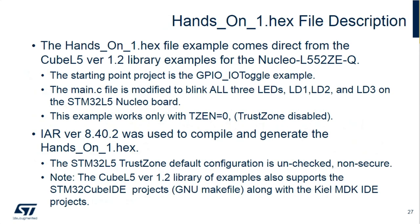The starting point for hands-on number one was the Cube L5 version 1.2 library. I took the GPIO toggle example for the L5 Nucleo board — all examples are based on board support packages. TrustZone is disabled in this example, so it will not run if you enable TrustZone, because there are additional steps required. It was compiled under IAR version 8.4. In IAR you have to identify whether TrustZone is enabled or not, and declare what's secure and non-secure when creating a project — I'll cover that in hands-on three.